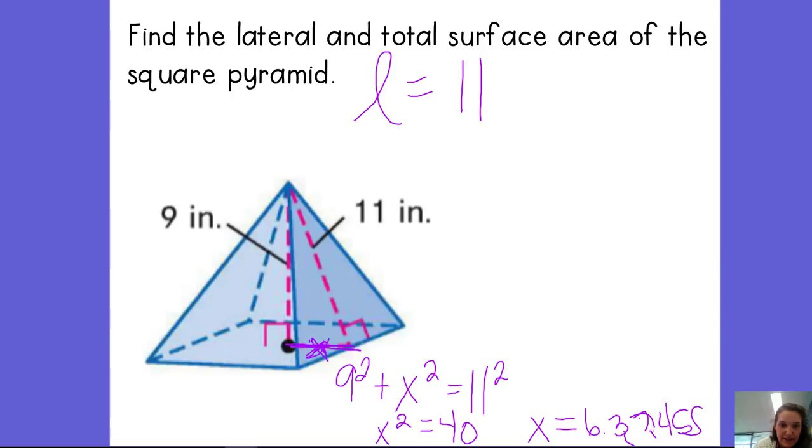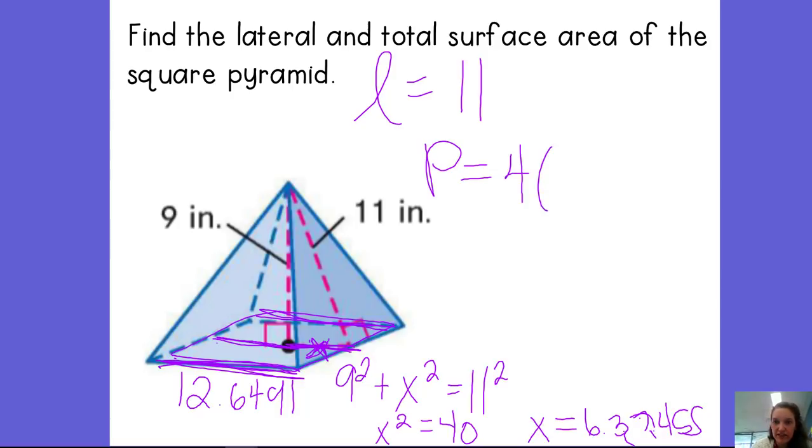So that is this piece right here. So if this is a square, I can just double it to get that whole side length. So these are all the same length. So if X is 6.32455, I'm just going to multiply that by 2. So my side length is 12.6491. So the perimeter of my base is, well, it has four sides. And those four sides are all equal since it's a square. So it's 12.6491. So the perimeter of the base is 50.5964.